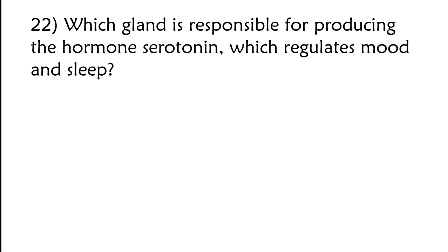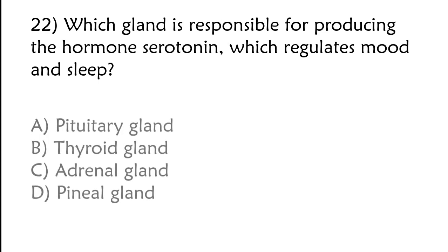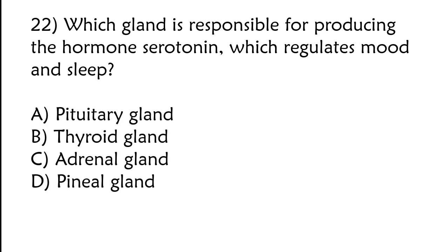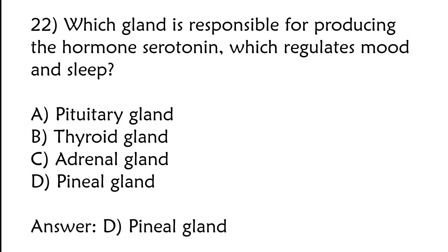Which gland is responsible for producing the hormone melatonin, which regulates mood and sleep? A) Pituitary gland, B) Thyroid gland, C) Adrenal gland, D) Pineal gland. The correct answer is option D: Pineal gland.